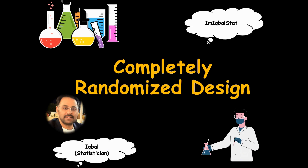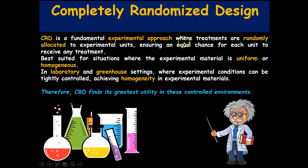Welcome back. In this video, we'll learn a very important experimental design widely used in laboratory experiments or whenever we conduct experiments under controlled conditions. It is known as Completely Randomized Design, commonly known as CRD. CRD is a fundamental experimental approach where treatments are randomly allocated to experimental units, ensuring an equal and independent chance for each unit to receive any treatment. It is best suited where experimental material is uniform or homogeneous, and widely used in laboratory experiments and greenhouse settings.